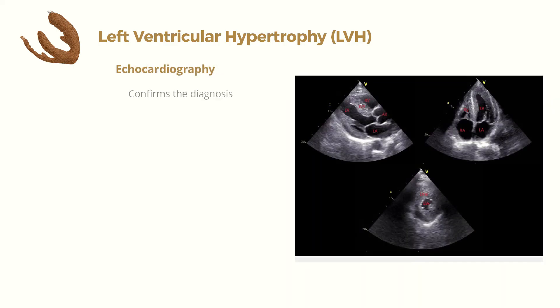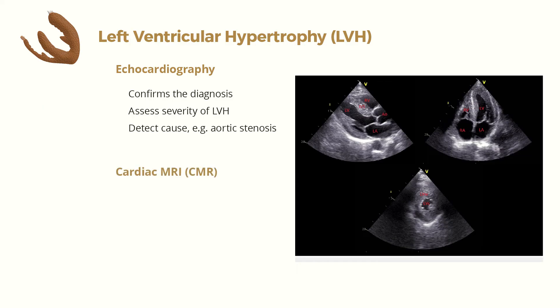The procedure of choice for diagnosing LVH is echocardiography, given its widespread availability, ease of use, and lack of radiation. Echocardiography can also permit quantitation of LV mass, including the severity of LVH, and give important information about the etiology of LVH, such as aortic or mitral valve disease, or hypertrophic cardiomyopathy. However, echocardiography may be non-diagnostic in patients with suboptimal acoustic windows. In such instances, cardiac magnetic resonance imaging is a reasonable alternative, although CMR is not universally available.